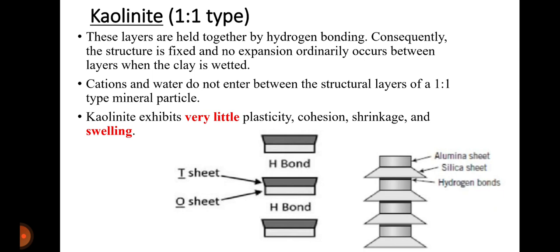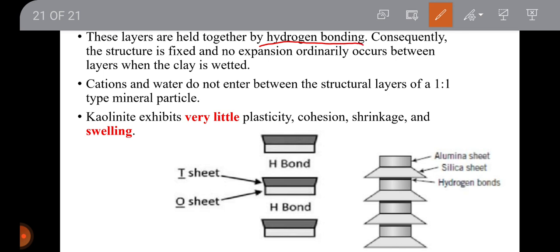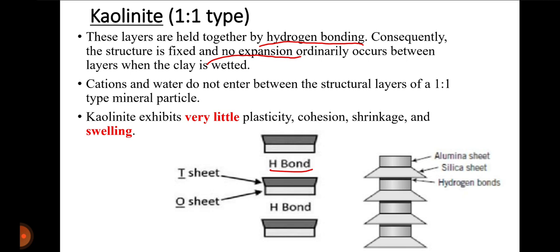Kaolinite is a 1:1 type mineral. Its layers are held together by hydrogen bonds, which are very strong, so this structure is fixed and no expansion ordinarily occurs between layers when the clay is wetted. Cations and water do not enter between the structural layers, so kaolinite exhibits very little expansion, very little plasticity, cohesion, shrinkage, and swelling.